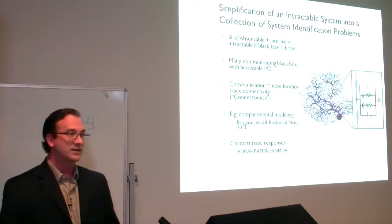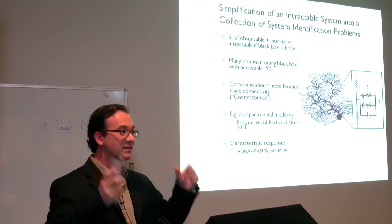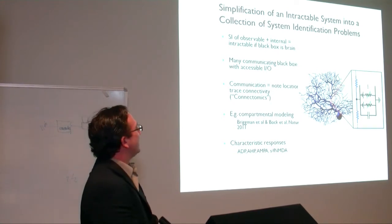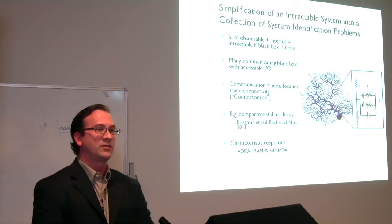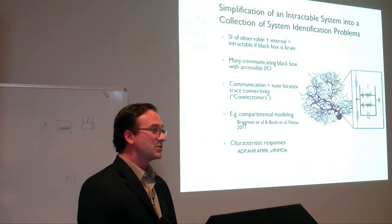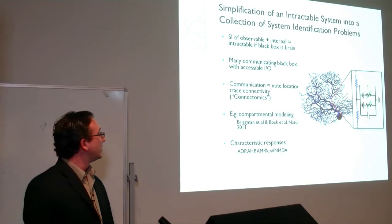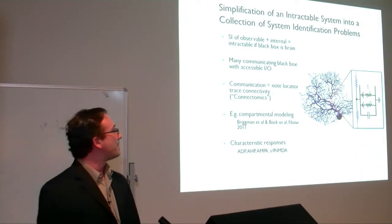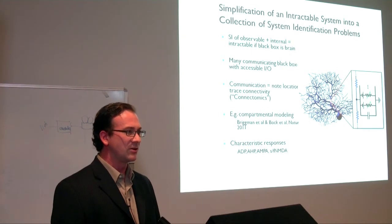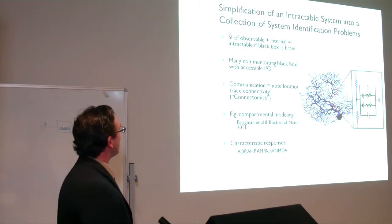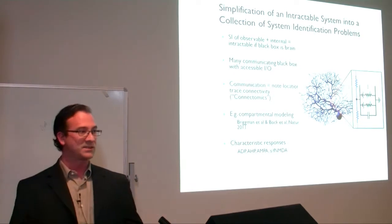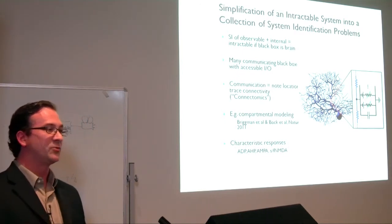Moving on to simplification: if your black box in a system identification task is an entire brain, you have a really big problem — a hundred billion neurons and trillions of synapses, all parameters you're trying to define just by looking at some input and output. Instead, you want to break this giant problem into many smaller, more tractable system identification problems. The smaller you make them, the more tractable they are.